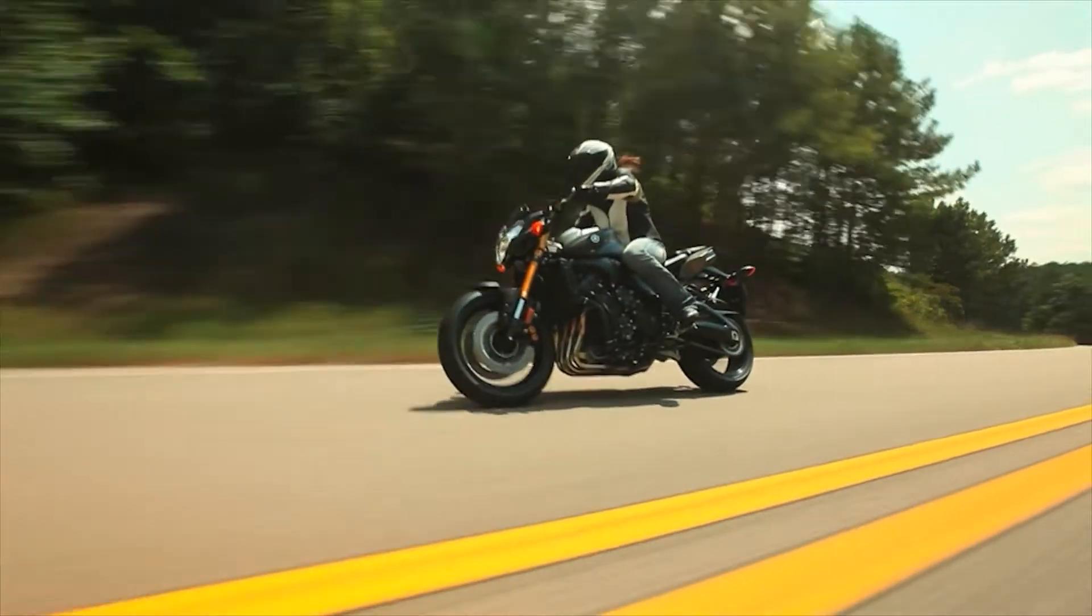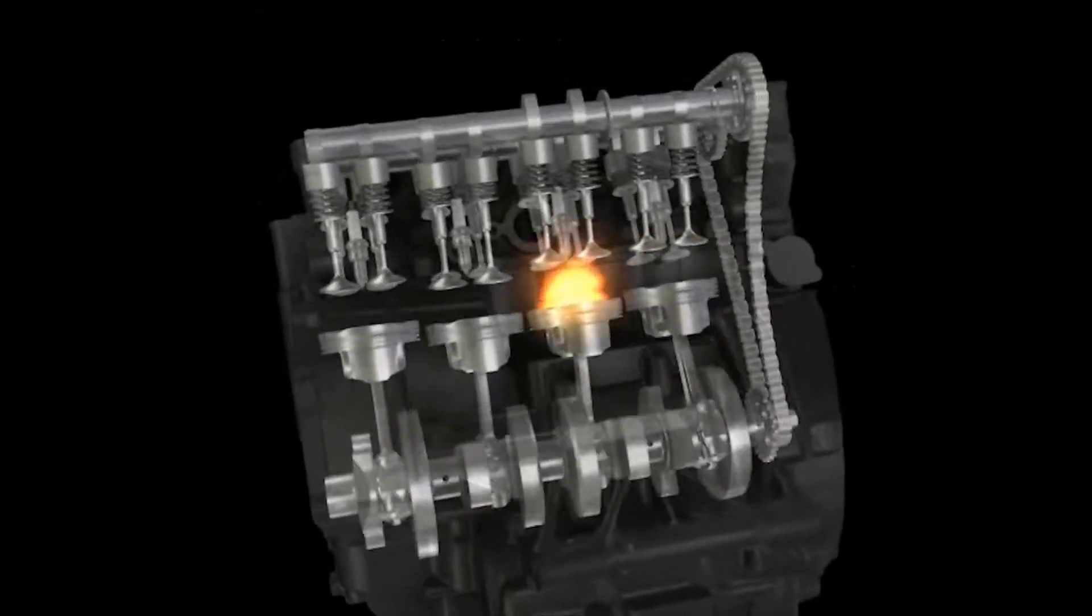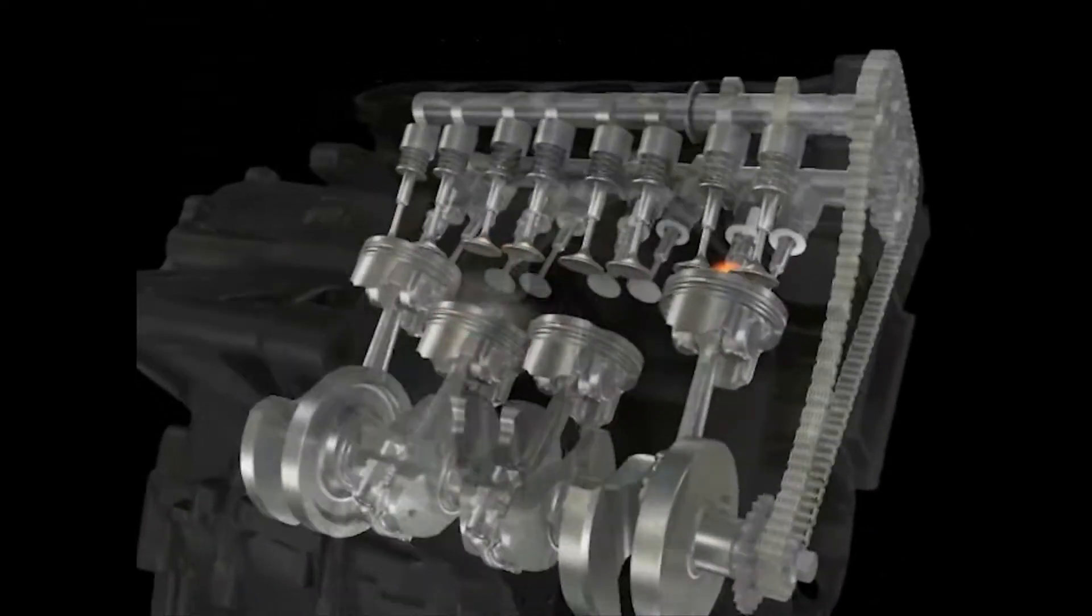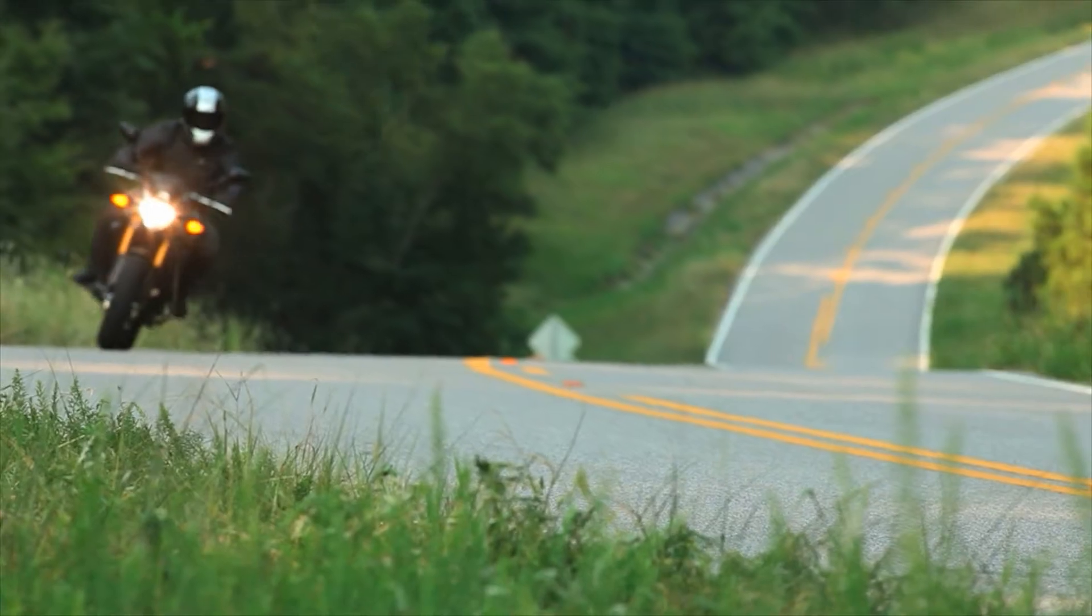When running, internal combustion engines produce two different types of torque. Burning of the air-fuel mixture increases the cylinder pressure, forcing the piston down during the power stroke, producing combustion torque, which is directly controlled by the rider's input on the throttle.